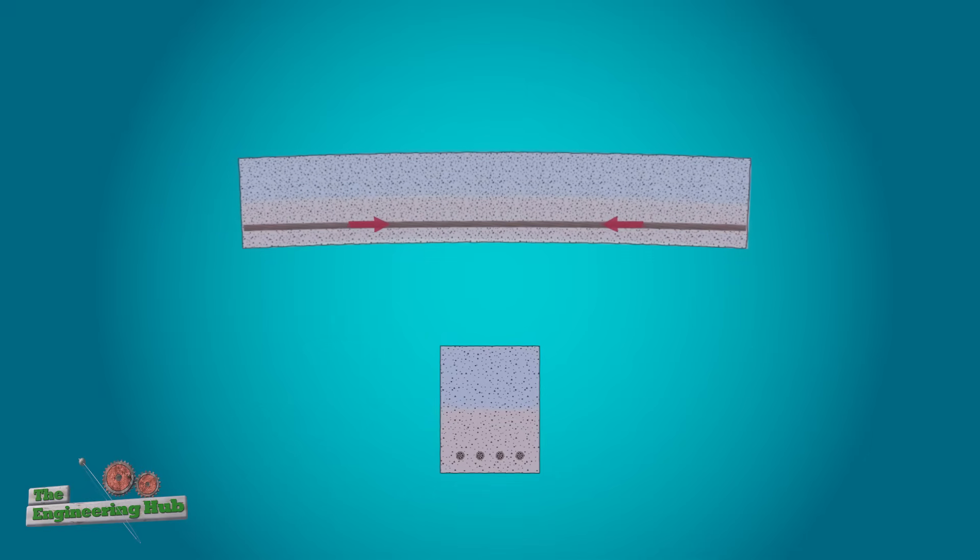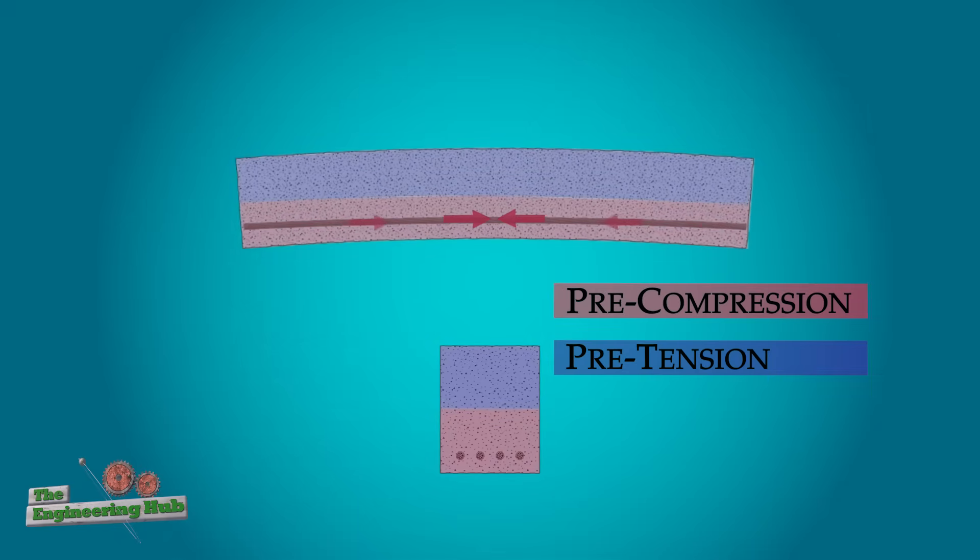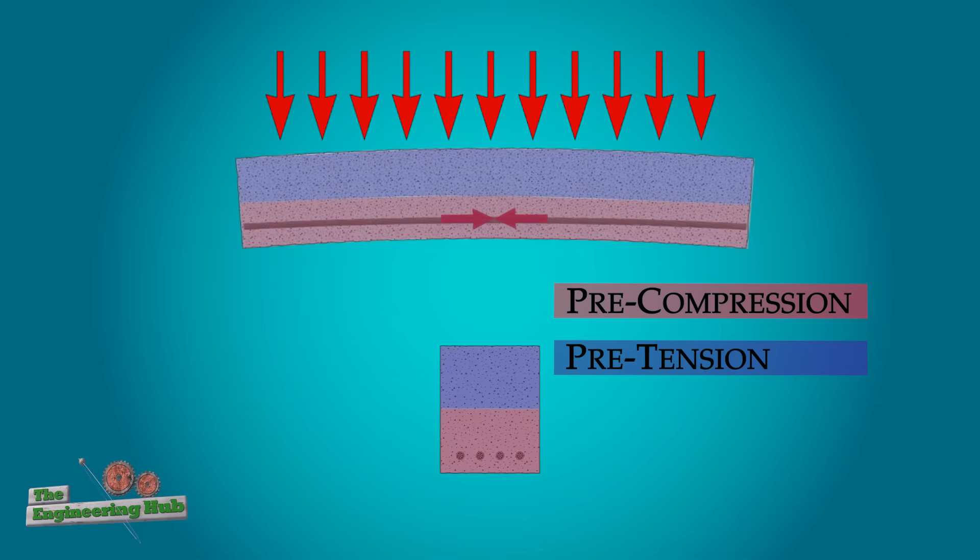Now the pre-stressed cables will contract. This induces compression in the bottom half as part of manufacturing, sort of like a cambering effect.